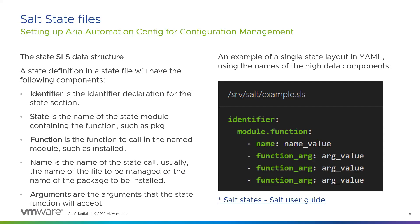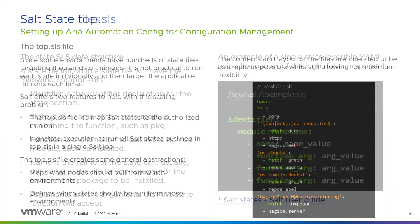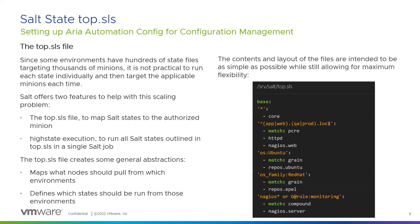A state definition in a state file will have an identifier, followed by the name of the state module, then a function to call, the name of the state, and the arguments that state may accept. As your environment grows from initial few state files into full production use, you could find you have an overwhelming number — hundreds or thousands of them. This is where the top state file comes into play: we can organize the state files using grain values when creating targets.